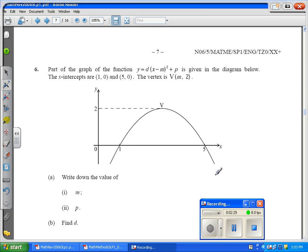Okay, I'm now moving on to question 6, which is a function, it is a quadratic parabola, and for part A, all we need to do is find M and P, and if you look at the equation of the parabola here, M and P are actually the X and Y coordinates of the vertex, which is this point.